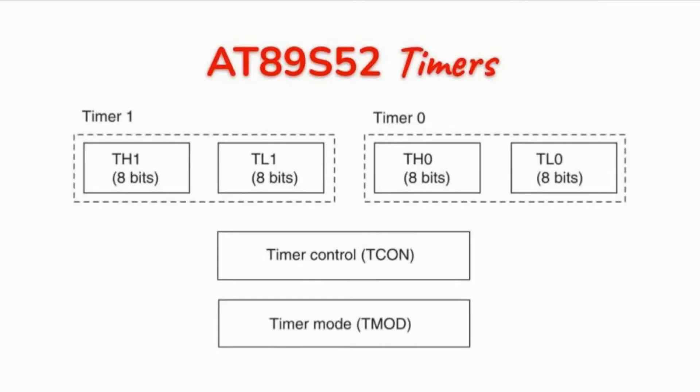The AT89S52 microcontroller has three 16-bit timers: timer 0, timer 1, and timer 2. In this video, we'll focus on timer 0 and timer 1.